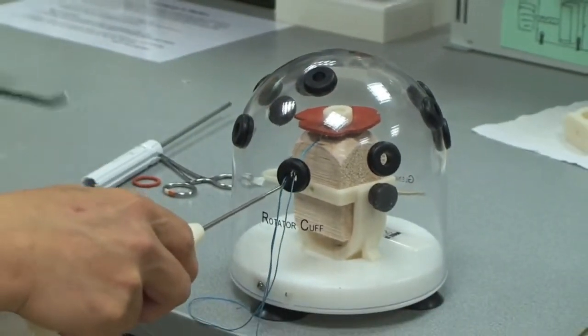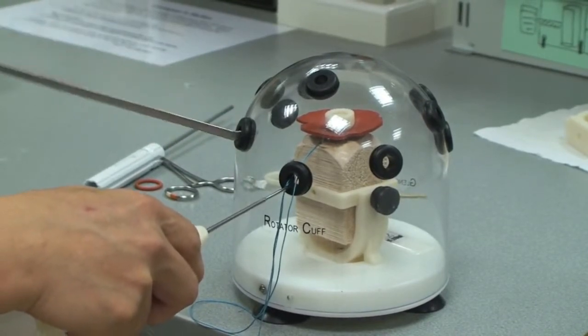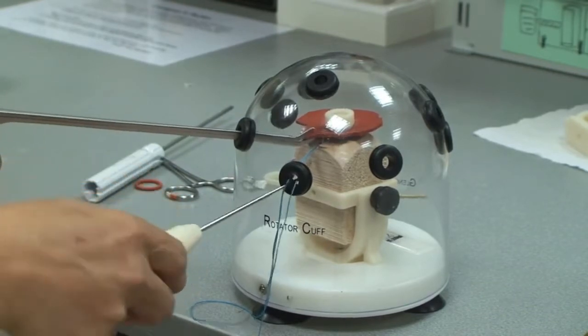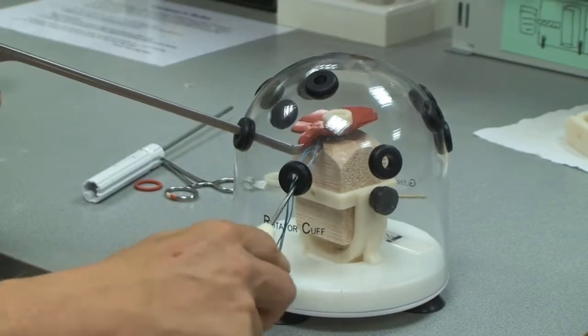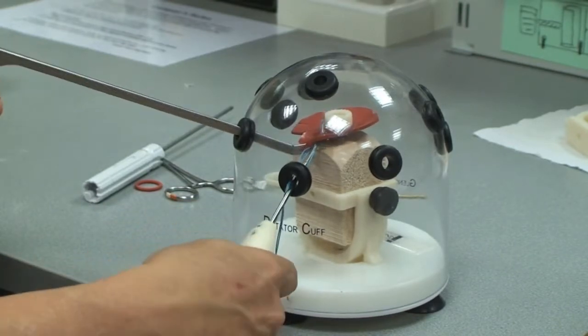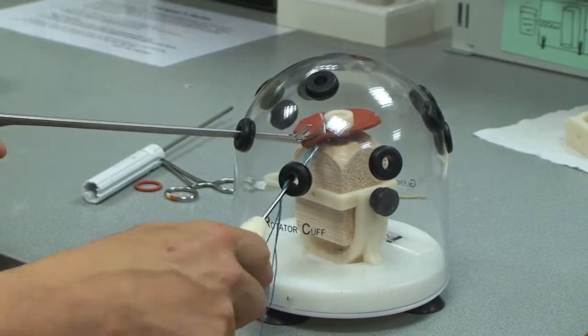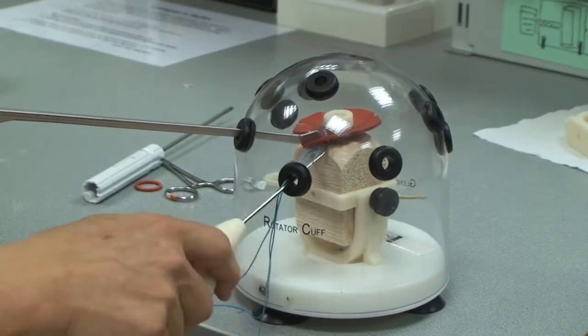Then I use a grasper through one of the posterior portal or the anterior portal. In this case, I use a posterior portal. Pass it through the cuff. Release that. Like that. And then use the grasper to grab the suture.